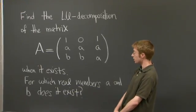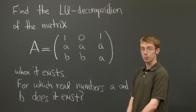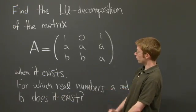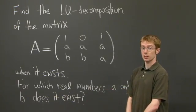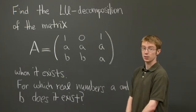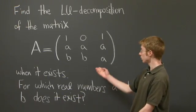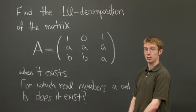Now, notice that this matrix A has variables as well as numbers. So the sentence ends when it exists. And the second part of the question asks you, for which real numbers a and b does the LU decomposition of this matrix actually exist?